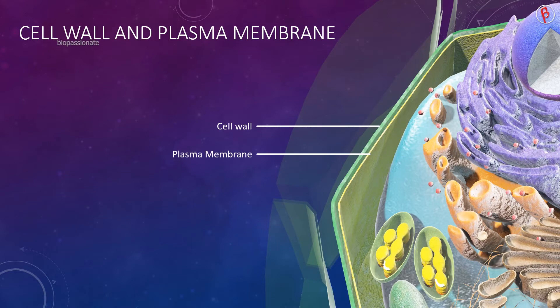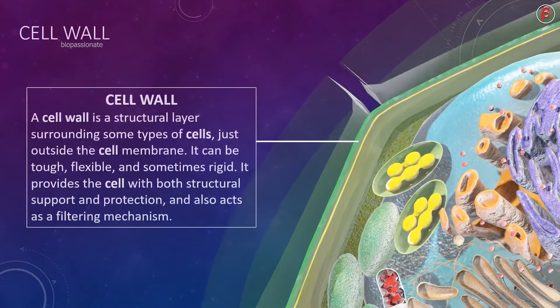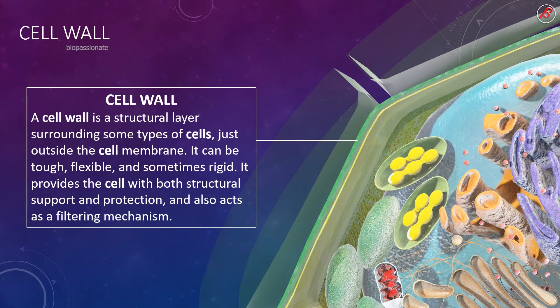One of the distinct characteristics of a plant cell is the presence of cell wall. A cell wall is a structural layer present just outside the cell membrane. It can be tough, flexible and sometimes rigid. It provides structural support and protection to the cell and acts as a filtering mechanism.